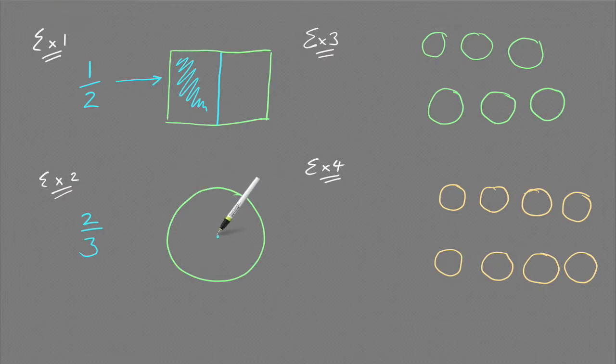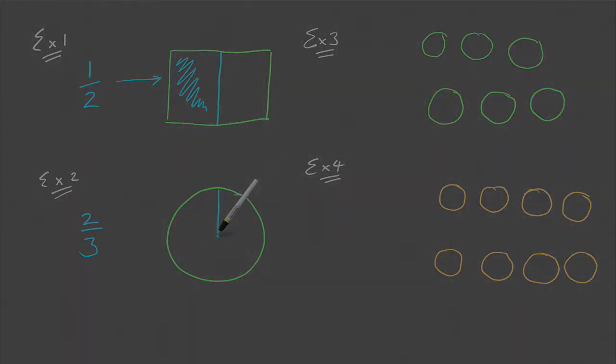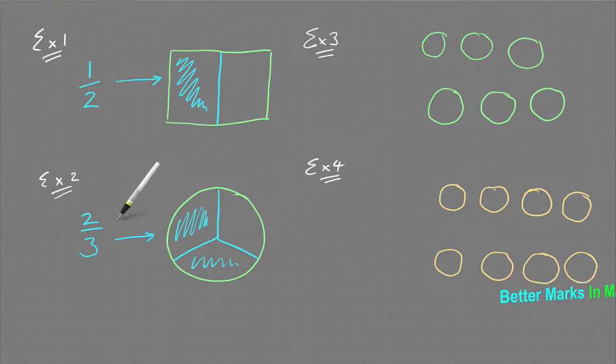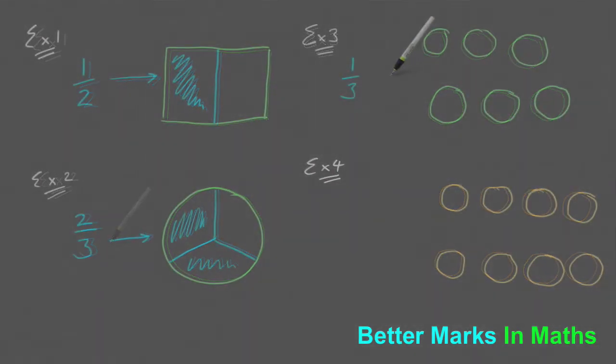And the 2 means that I need to color in two of those parts, like such. I'm going to point to them. And now I have colored in 2 out of 3 equal parts.